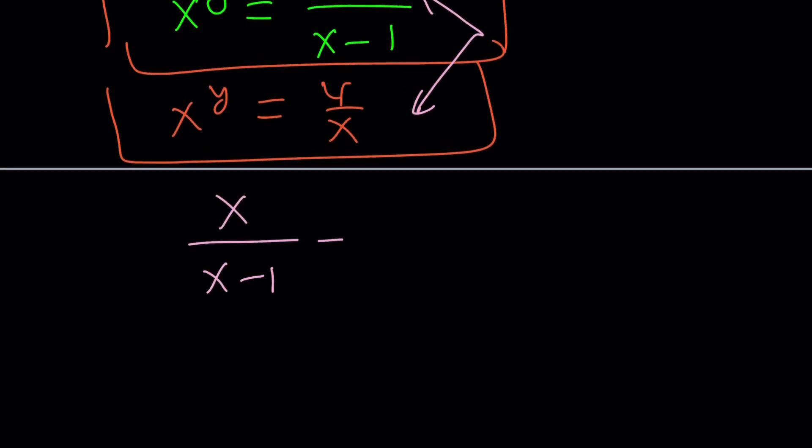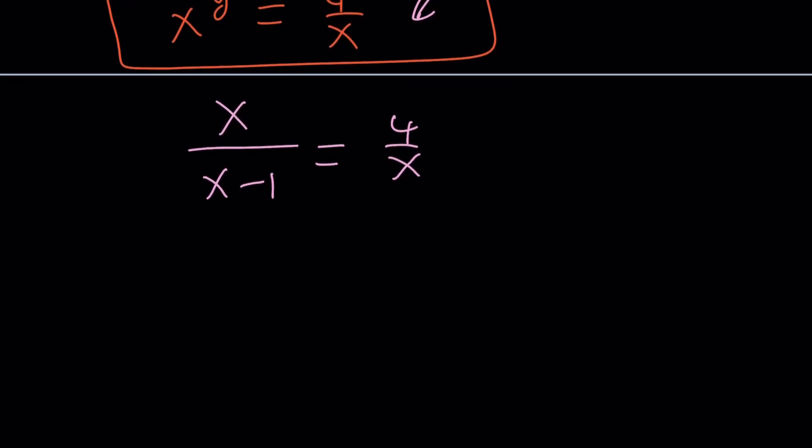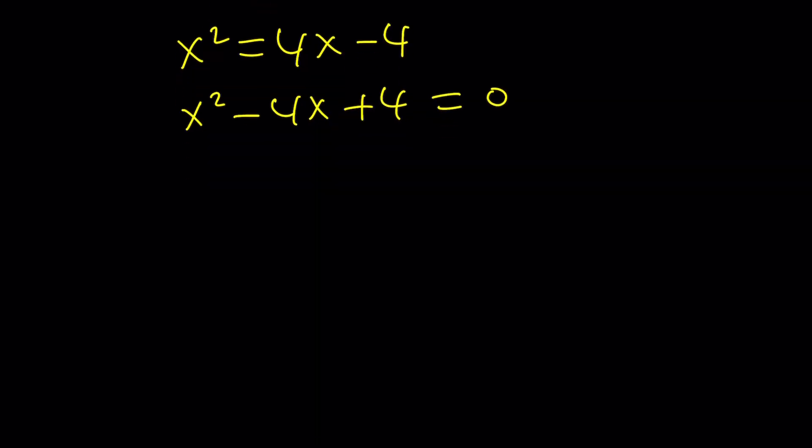x over x minus 1 equals 4 over x. This gives us a rational equation. We have to be careful about certain values: x cannot be 0, x cannot be 1, and so forth. Let's cross multiply. Under those conditions, we get x squared equals 4x minus 4. Let's put everything on the same side. And guess what? We do get a perfect square. This is x minus 2 squared equals 0.